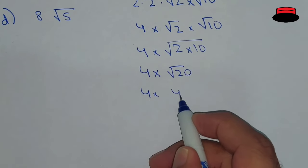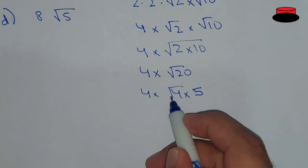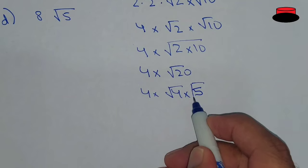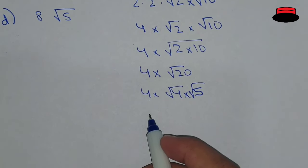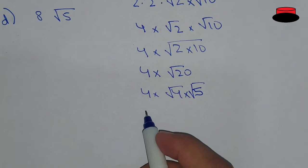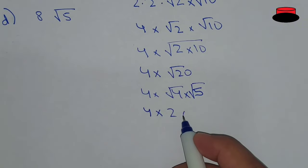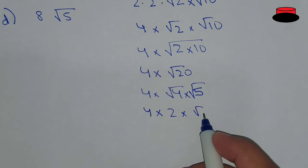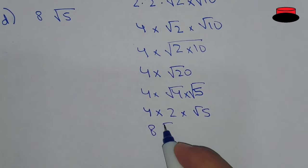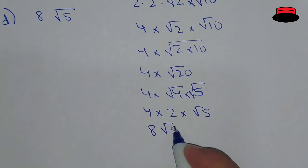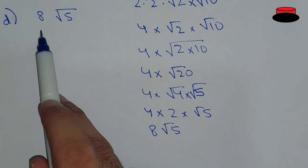Now, under root 20 can be written as under root 4 into 5. So we will separate these two roots: 4 into under root 4 is 2, multiply by under root 5, and 4 into 2 is 8. So, 8 under root 5.